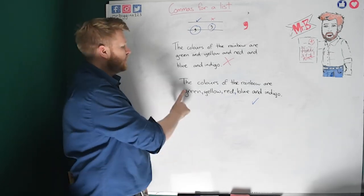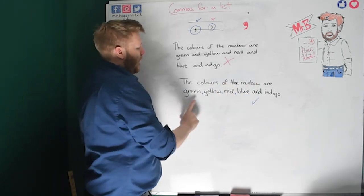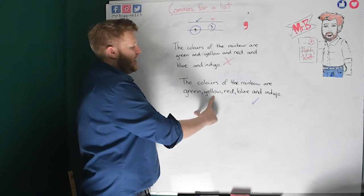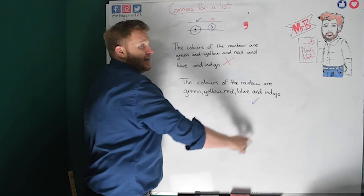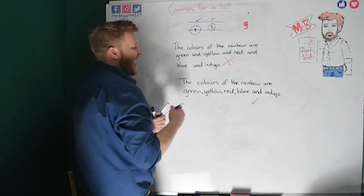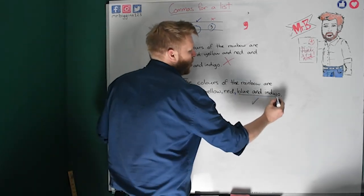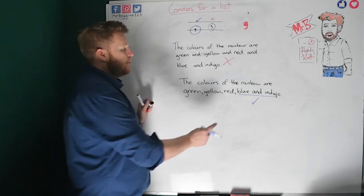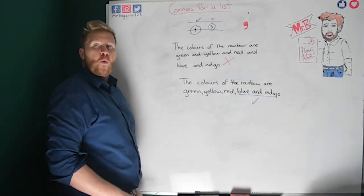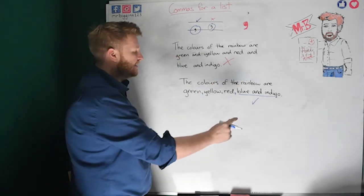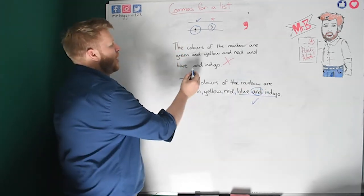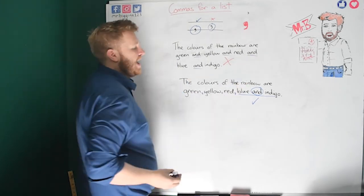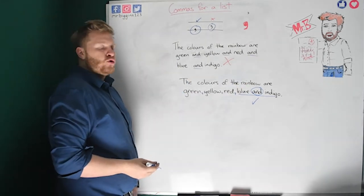This is how we should have done the list. The colours of the rainbow are green, comma, yellow, comma, red, comma, blue and indigo. Now, what you might notice is, at the end, we don't actually use a comma between blue and indigo. When we're on to the last item in our list, we use the word and. But that means we're only using it once rather than one, two, three, four times that we have there.